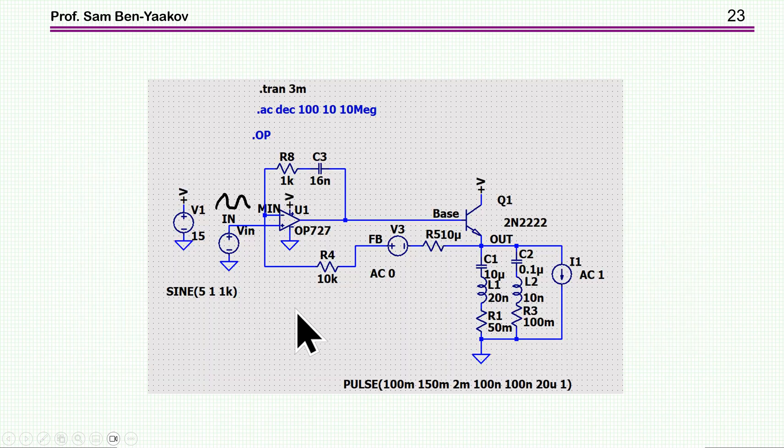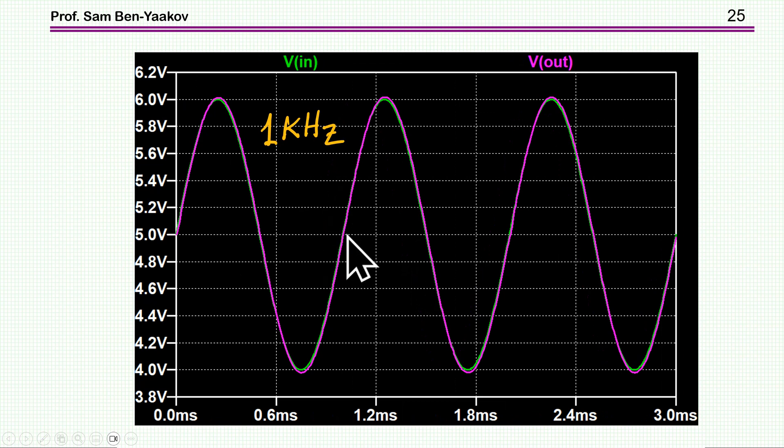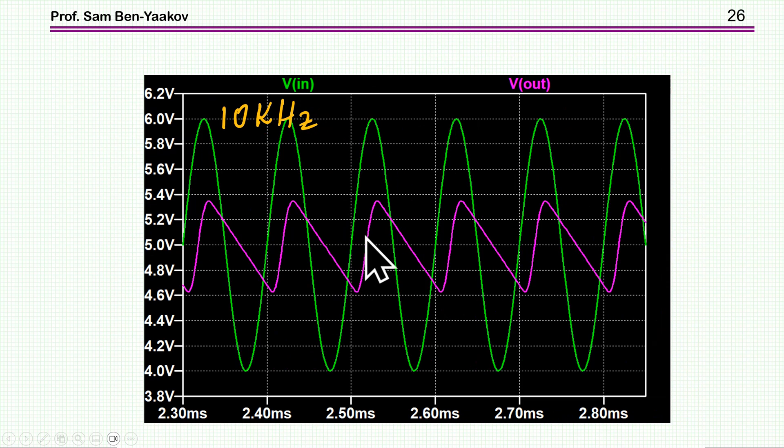So, now, what about the large signal time domain response between input and output? So, I'm feeding a sinusoidal waveform. Starting with 100 Hz, we see the input and output, one on the top of the other. And, as you can see, it's very nice in terms of the gain and the distortion. 1 kHz. This is on the verge of the bandwidth that we have. Still pretty good. And, then, as I jump to 10 kHz, then we are beyond the bandwidth. And, not only that the amplitude is lower, we get distortion. And, this is very reasonable with this system.